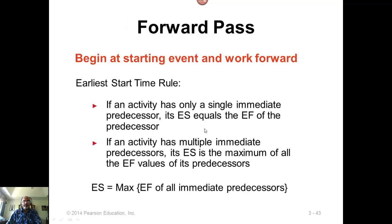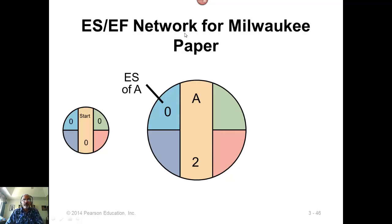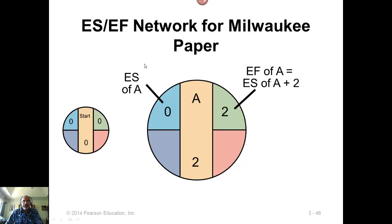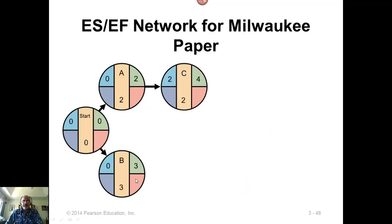Now forward pass. I am going to illustrate these rules in the example using the same network from a couple of videos back. We start with activity A at the very beginning. Earliest start time is 0, and the earliest finish time is start time plus activity duration. Now B is also at the beginning, parallel to A. Earliest start time for B is 0, and 0 plus 3 gives you earliest finish time of 3. Now C comes right after A with only one predecessor, so you just put the earliest finish time of A as when C can begin. So 2 plus 2 equals 4.